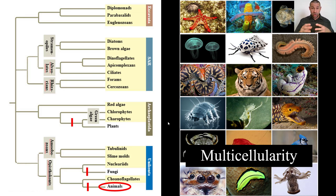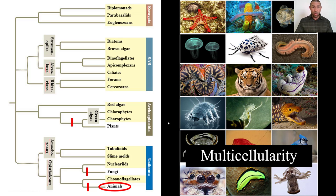We will discuss the rise of animal diversity in the final lecture in this unit. But again, I remind you that multicellularity evolves independently numerous times, including in the three lineages which give rise to the kingdom Plantae, Fungi, and Animalia.